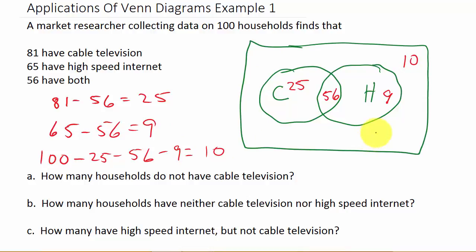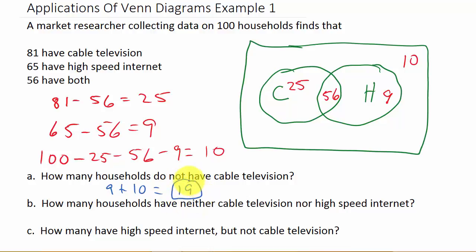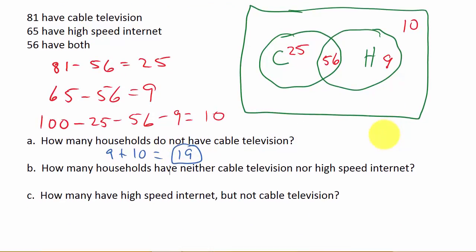Now we can answer the questions. Once you get the Venn diagram filled out, the questions are easy. How many households do not have cable television? All the people inside the circles have cable television, so the ones that don't are these 9 and these 10, giving us 9 plus 10, which equals 19.